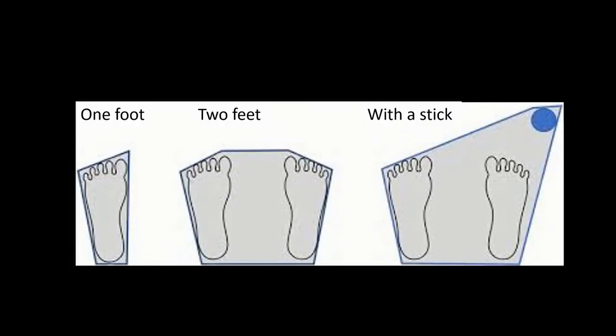Don't forget that the base of support is not only your feet, it's anything that is in contact with the ground. So here's a picture of the base of support for one foot, two feet, and then a person with a walking stick. You can see how a walking stick or a crutch massively increases the base of support and makes them much more stable. It's much harder for that line of gravity to fall outside that blue shaded area.